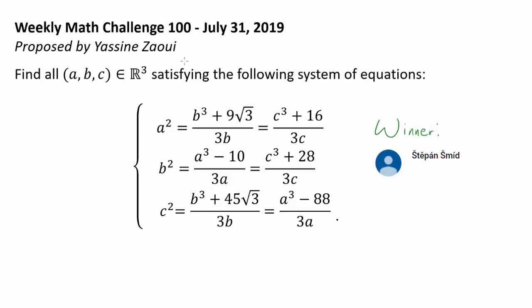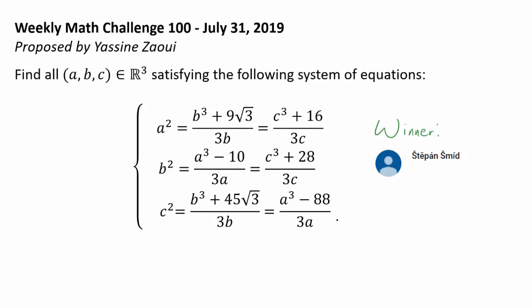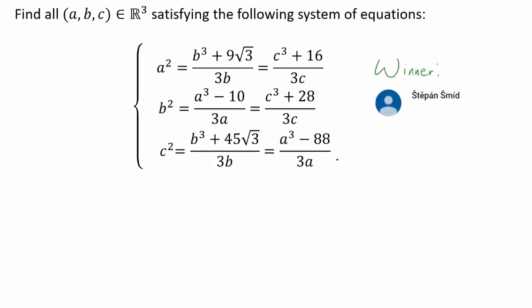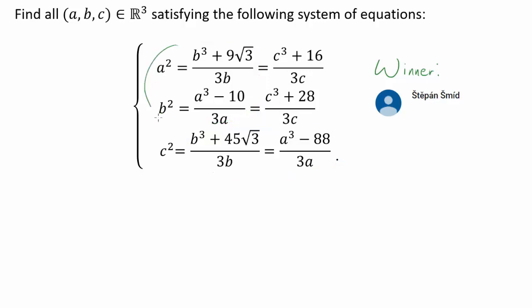The first thing we are going to do is isolate parts of the system of equations that are very similar to each other. More specifically, we are going to focus on just the pair A and B, and we see two equations that have A and B within them. Instead of thinking about A, B, and C at the same time, we can just think about two of them — A and B. We have one more equation with A and B, but structurally it is not the same as the first two, so we will focus on those two similar ones.